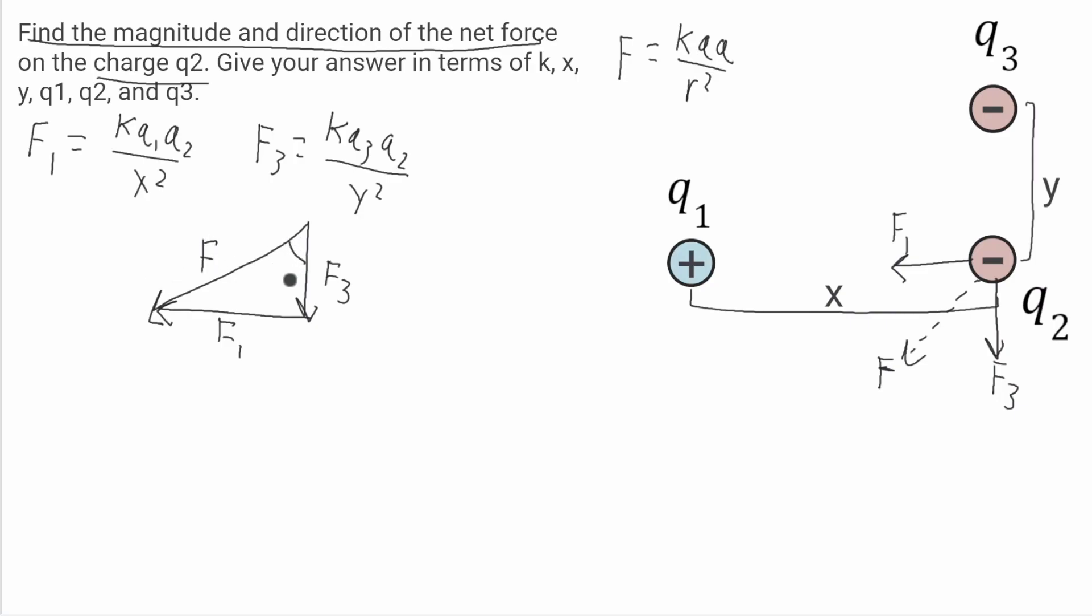And I'll call this angle here theta. Now, using the Pythagorean theorem, I can say that F is equal to the square root of F1 squared plus F3 squared.